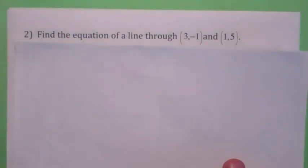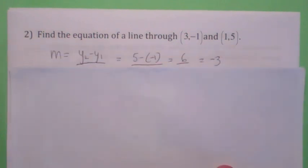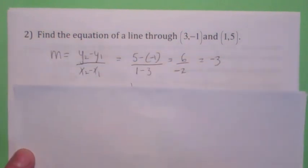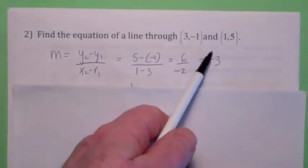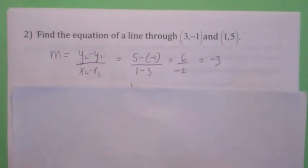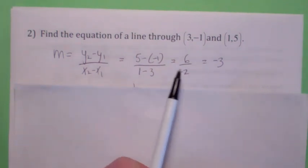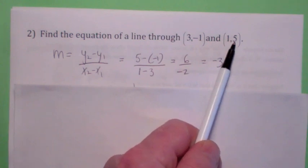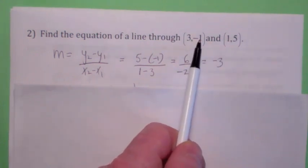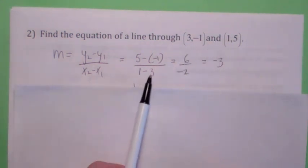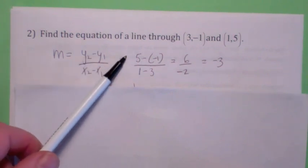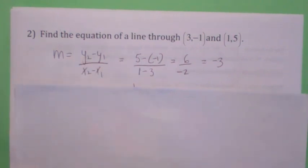Well, what if you're given two points? How do you find the equation of that line? First, you have to find the slope using the definition of slope. It doesn't make any difference which point you call x1, y1, as long as you're consistent. So if I take 5 minus negative 1 on top, I have to take 1 minus 3 on the bottom — change in y on top, change in x on the bottom. I get 6 over negative 2, which is negative 3.